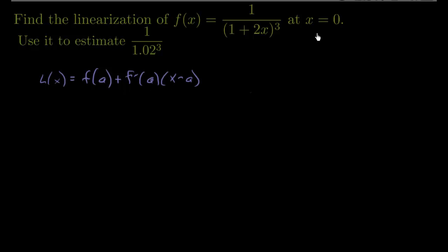Notice that we need an a. Now this right here is a. a is where you're actually finding the linearization. So a is going to be 0. So that's going to be f(0) plus f prime at 0, and then x minus 0.